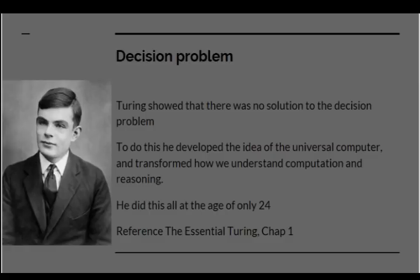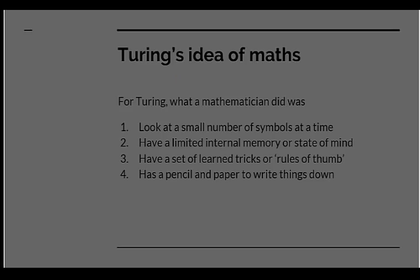Turing made his name in 1936 by publishing a paper which showed there was no solution to the decision problem. In order to do this, he actually developed the idea of the universal computer and in the process he transformed how we now understand computation and reasoning. He did all this at the age of only 24. A key point was that Turing looked at what mathematicians did as an actual labour project, a work process, taking into account the limited abilities of the human perceptual system and the human brain.